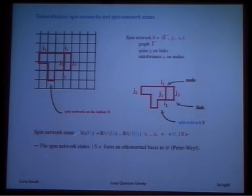Now, for each one of these objects, you can construct a state, basically by contracting the invariant tensor with the representation elements. And these states, again, have the same properties. So, they're eigenstates of the electric field where the eigenvalues concentrate on the graph and form a basis, an orthonormal basis in the Hilbert space.